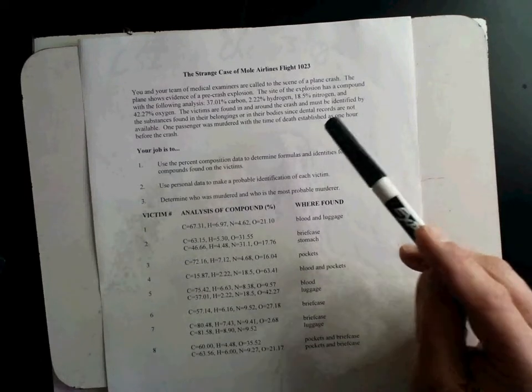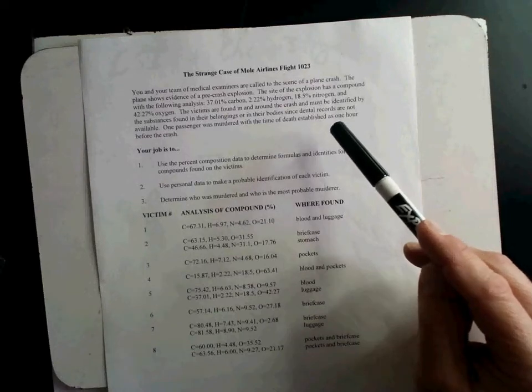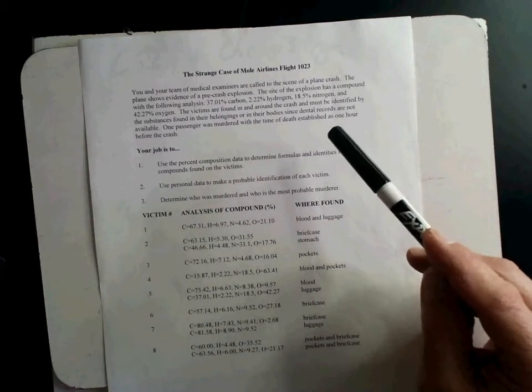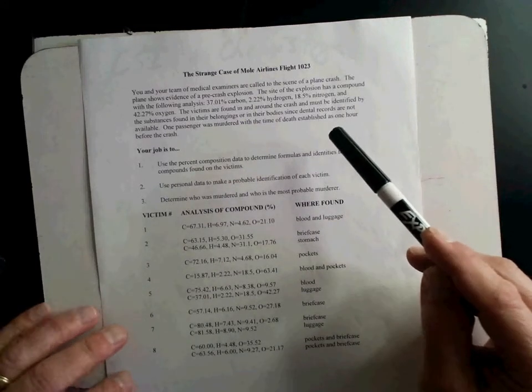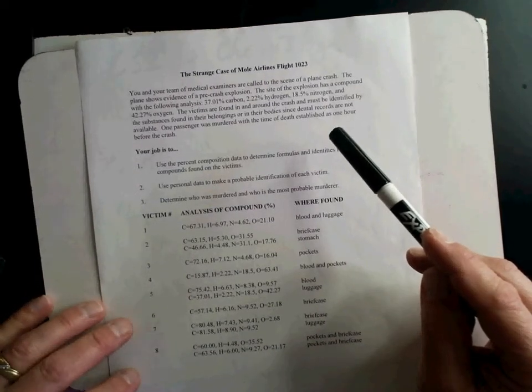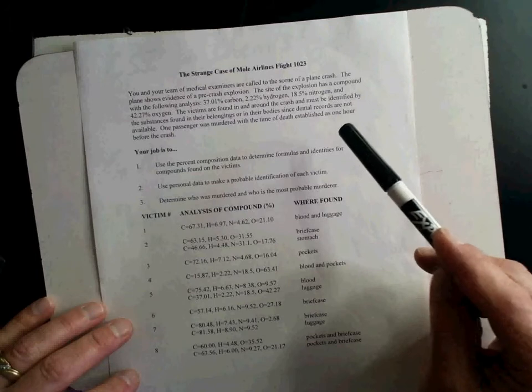When they go to figure out which body is which, anytime a disaster like that happens, they send out a team. That team has to decide which body is which person, those kinds of things. They have to identify each of the bodies. But as they are doing that, they find that somebody has been murdered before the flight ever exploded in air. So your job is to figure out who was murdered and who did it.